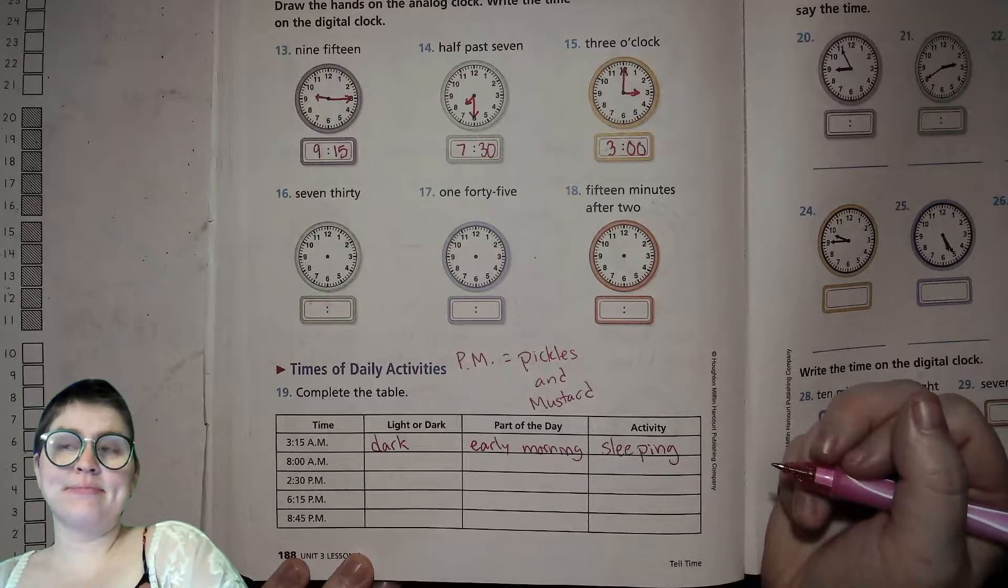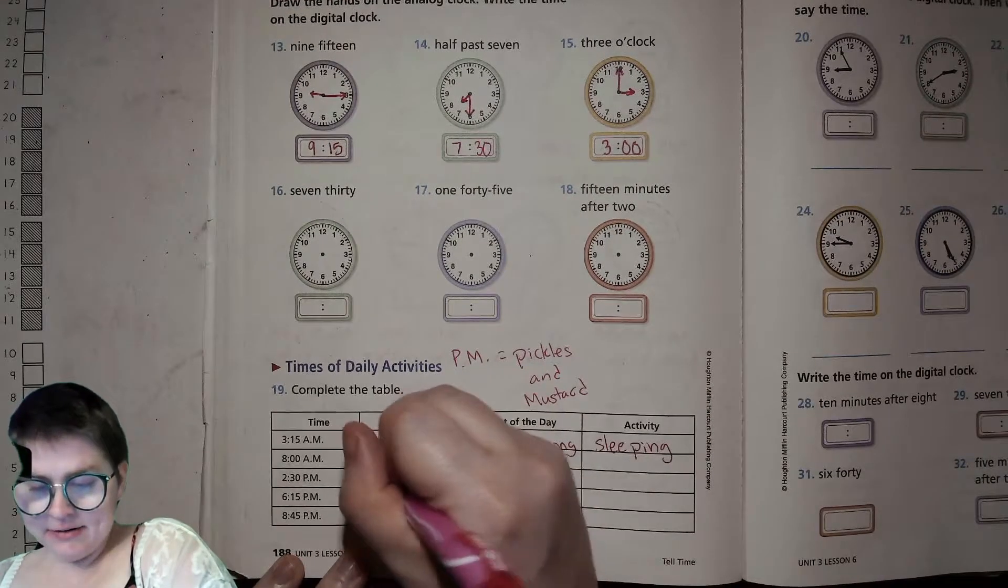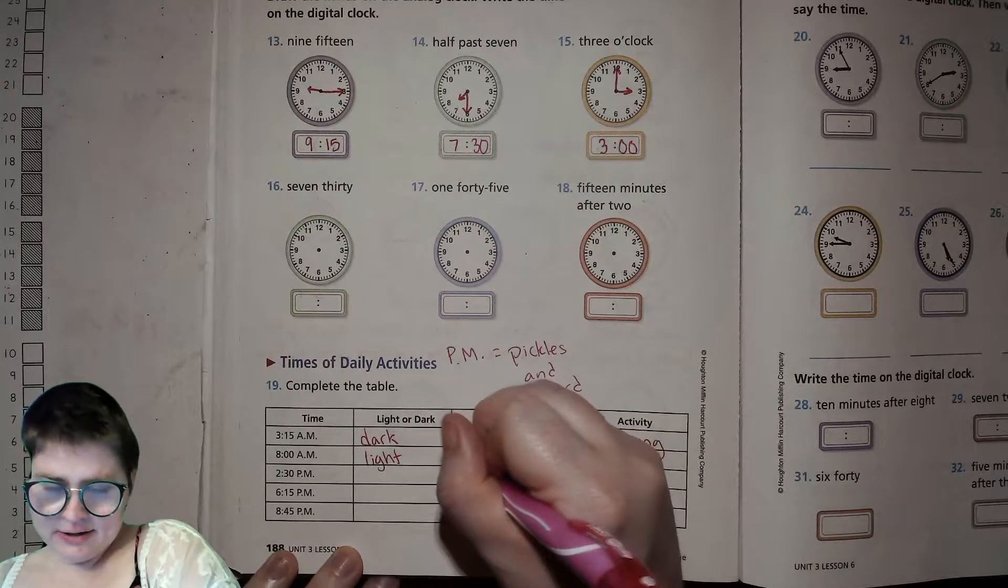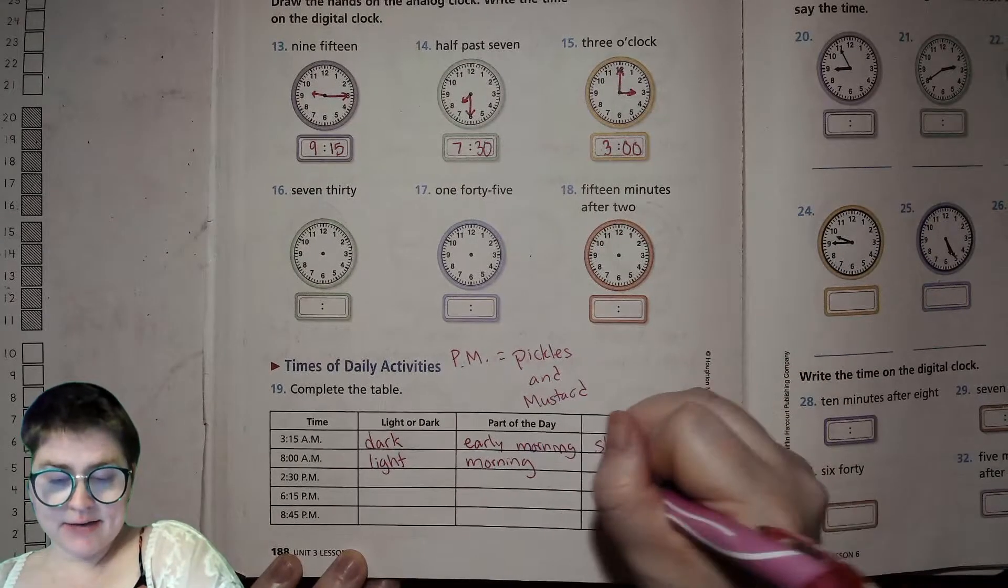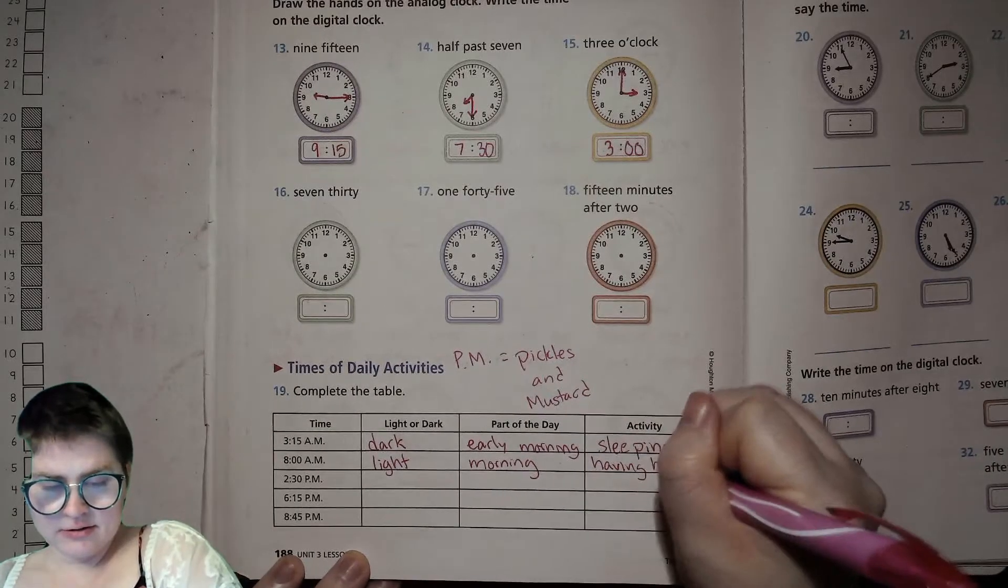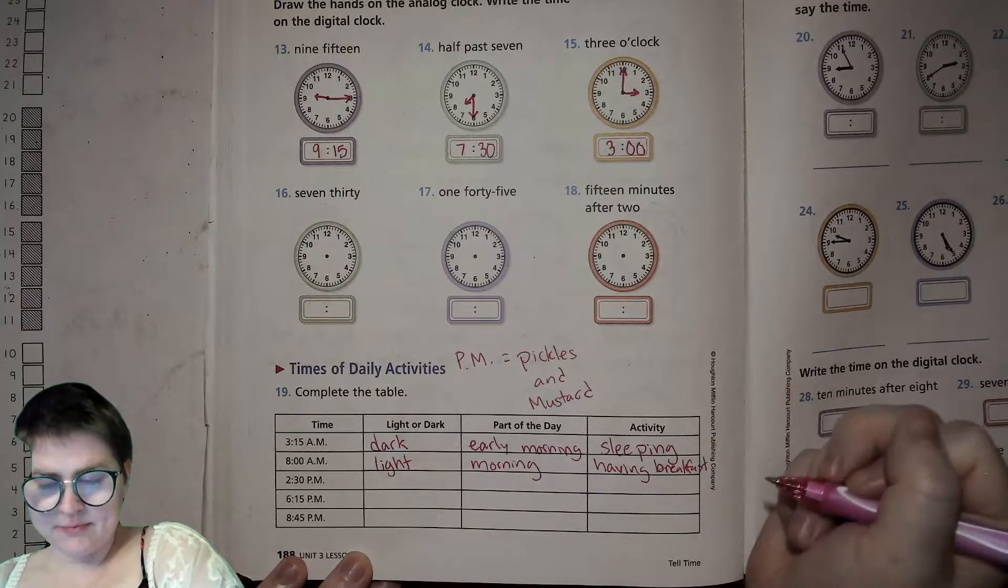8 AM. That would be eight in the morning, right? So it's probably light out. Part of the day is just regular morning. And an activity might be having breakfast.